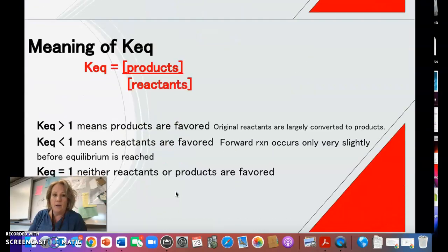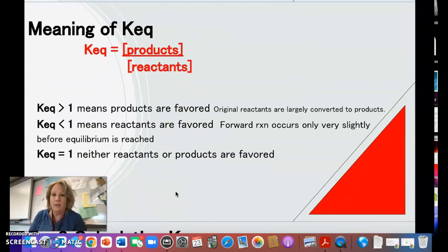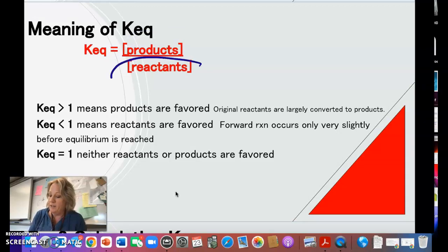So now why do we do this? We calculate KEQ because it'll have a number value. If it's greater than one, that means you have more products than you have reactants, so sometimes we say the products are favored. If the value is less than one, that must mean that you have more reactants than products, so then that means your reactants are favored. You're going to have more of the reactants than the products. And if it equals one, then you would say that neither the reactants or the products are favored.